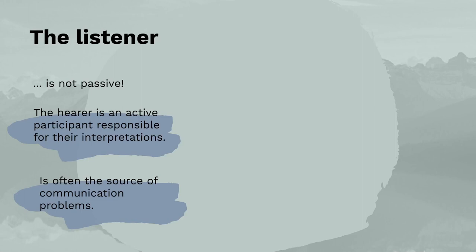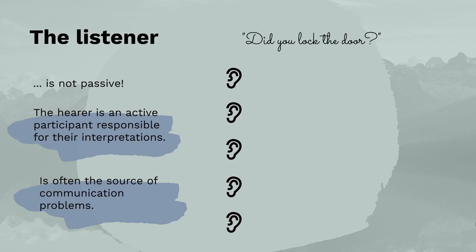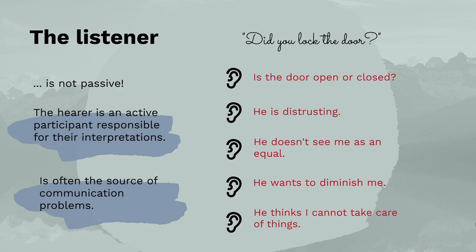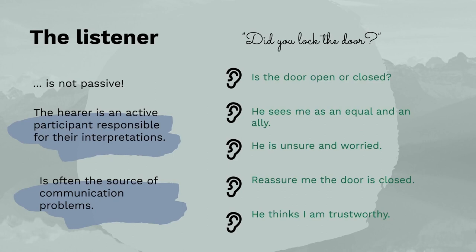Schultz von Thun suggests that hearers have five ears for five different interpretations of messages. The first ear hears only the facts, the second is for self-revelation, the third interprets the relation between the two parties, and the fourth listens to the appeal. The fifth hears what the speaker thinks of the listener. In practice, certain listeners are keen on hearing with only one or two ears. For example, if your partner asks whether you locked the door, some might interpret this negatively — as distrust — while others might see it positively, as simply seeking reassurance. Ultimately, there is no guarantee the hearer will receive the message as intended by the speaker.